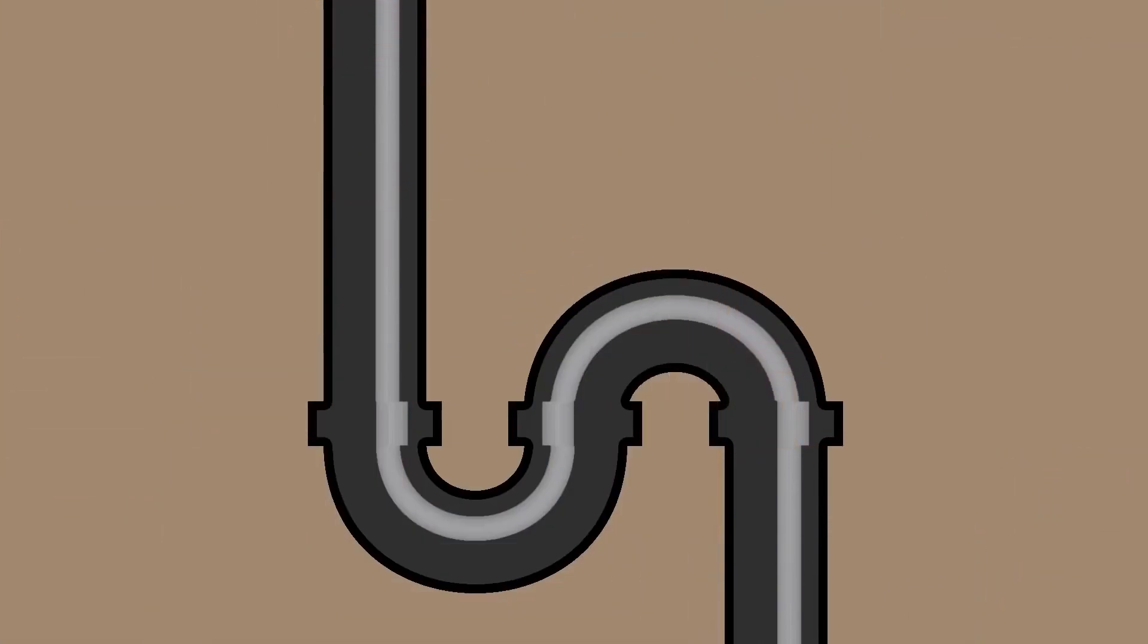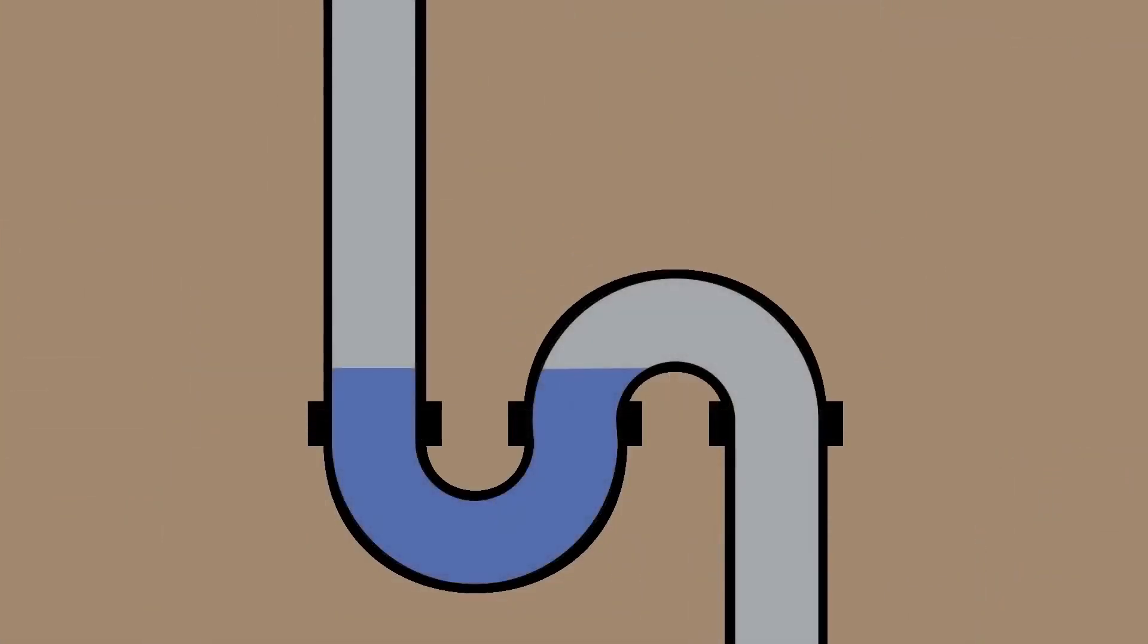S-traps are similar to P-traps, but are no longer installed in homes because they have the potential to lose the trap seal. If enough water travels through an S-trap, it will create a continuous channel through the pipe, and will siphon the water out of the trap.